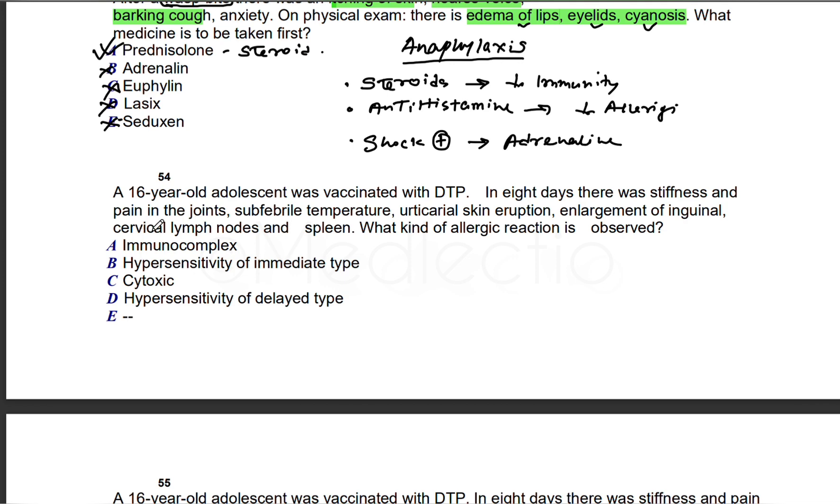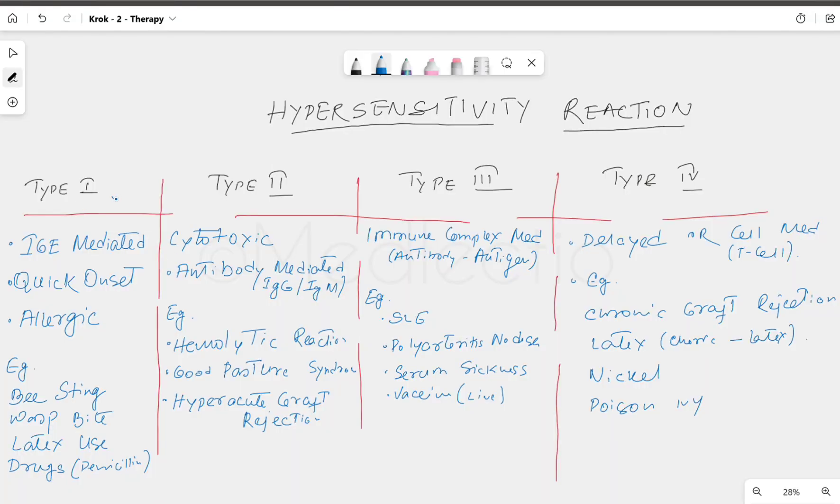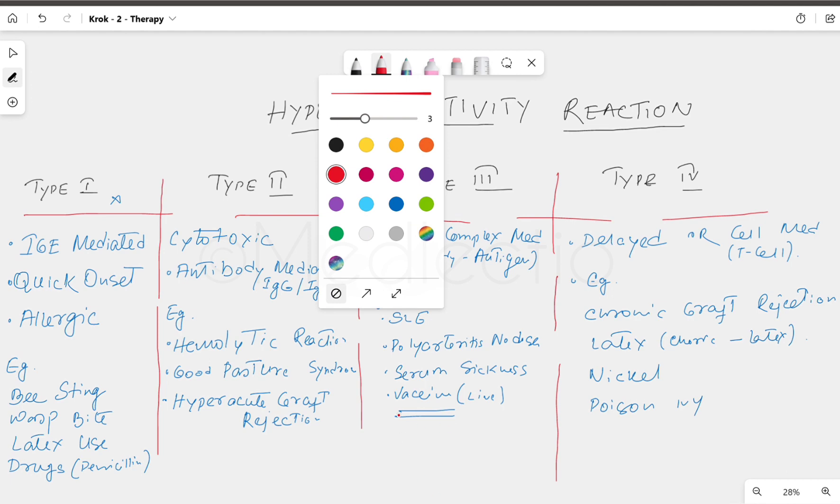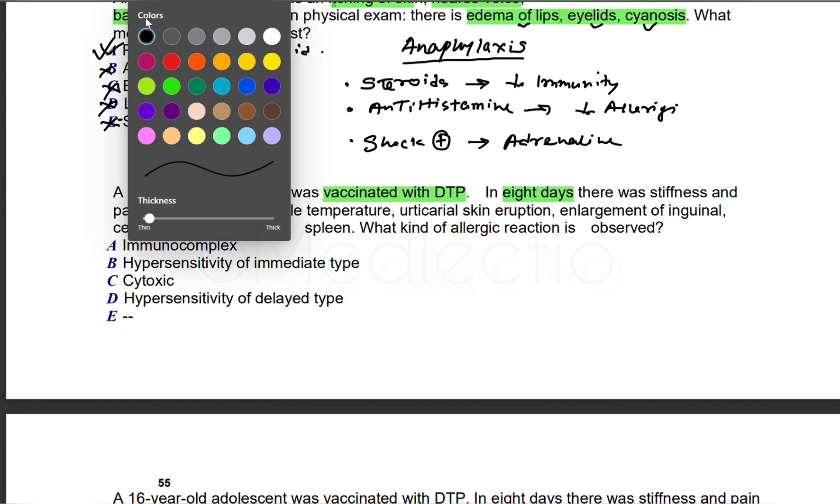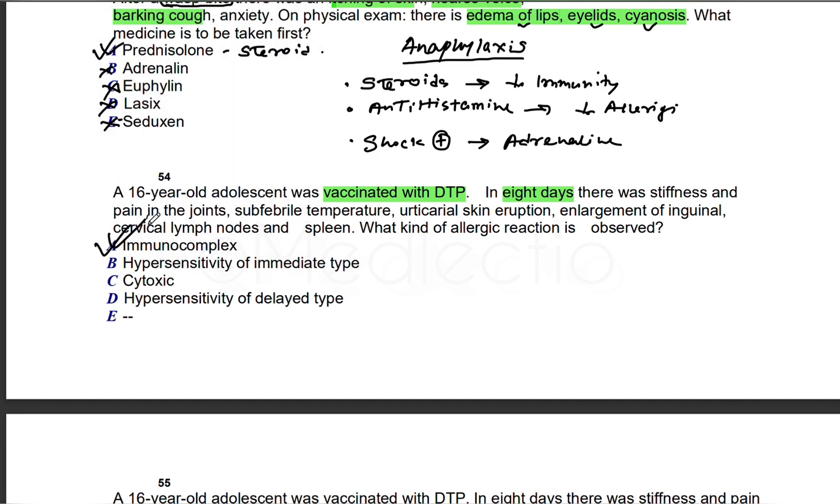Let's get back to our question. Vaccinated with DTP and we have all these reactions, an allergic reaction after eight days. After eight days, it can't be immediate Type 1, so left with three: Type 2, 3, and 4. We can see vaccine, live vaccine type—this is Type 3 hypersensitivity reaction. Remember this: immune complex-mediated, Type 3.